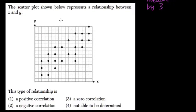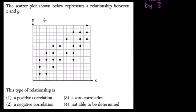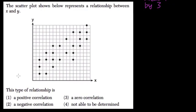The scatter plot below represents a relationship between x and y. What kind of relationship is this? You see, that's approximately fitting a general positive linear trend. It's called a positive correlation.